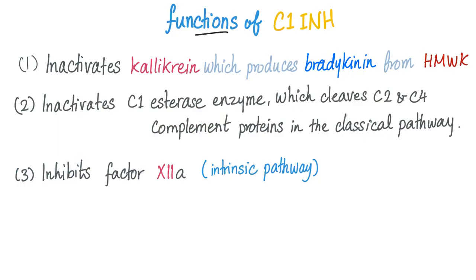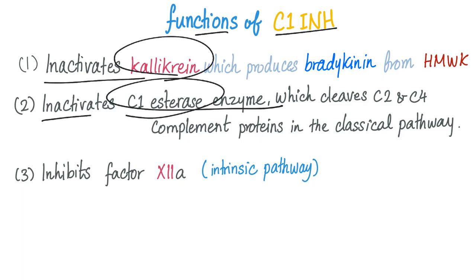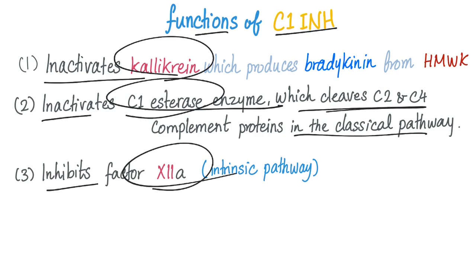What are the functions of C1-esterase inhibitor? It inactivates kallikrein, inactivates C1-esterase in the classical complement pathway, and inactivates factor 12 in the intrinsic coagulation pathway.